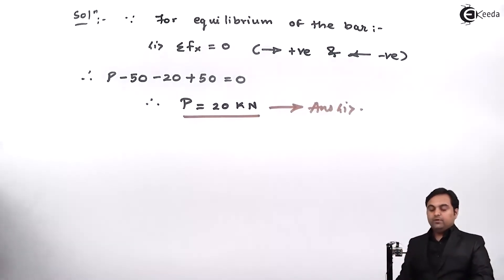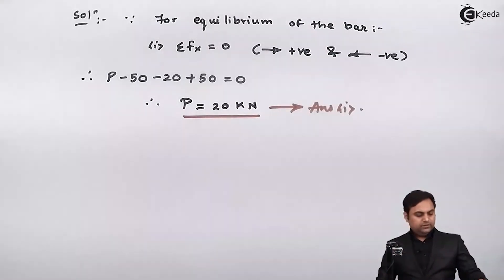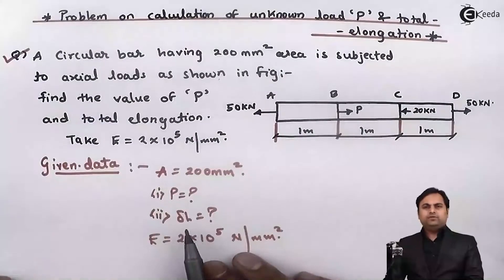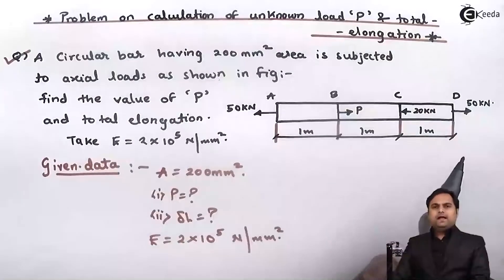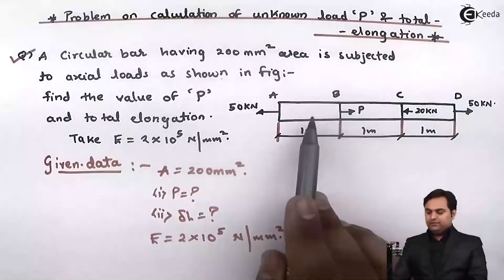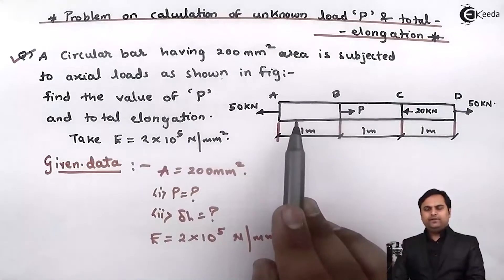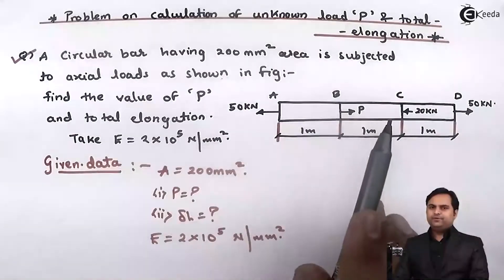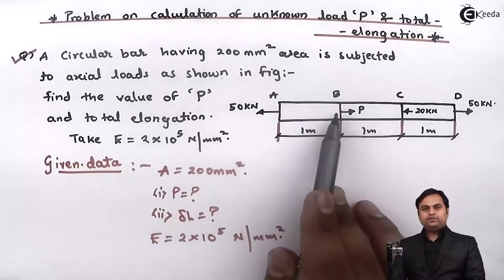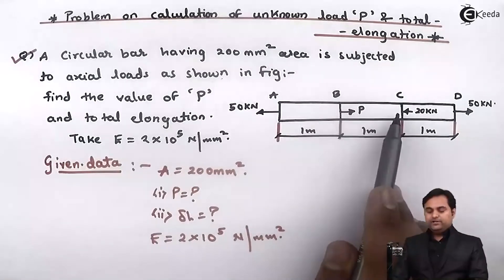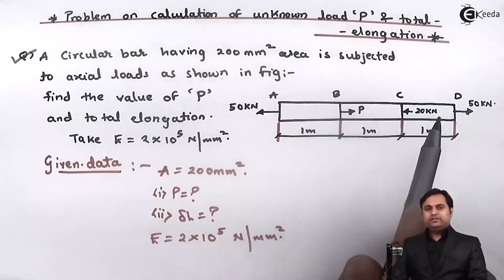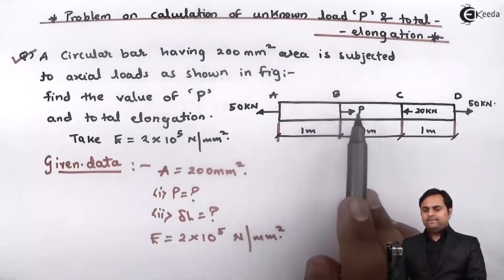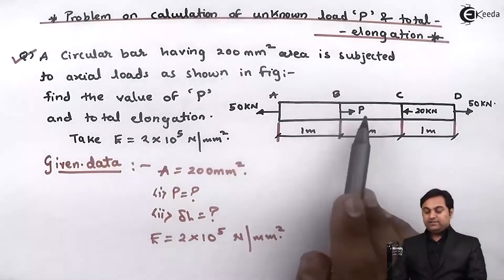Now for the second part — calculating total elongation — we separate each portion of the bar and calculate the deflection in AB, BC, and CD individually, then add them together. We calculate AB first, then CD, and finally BC, since the middle section should be calculated last.